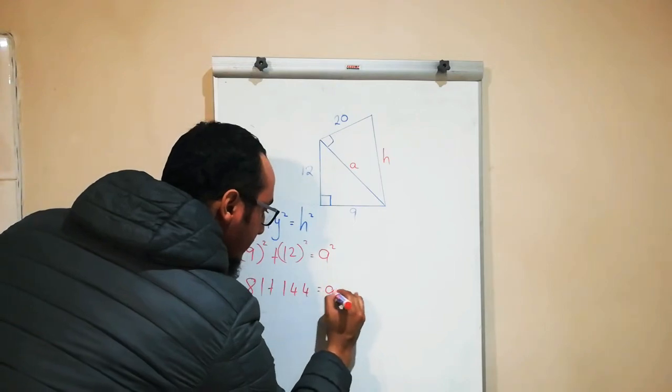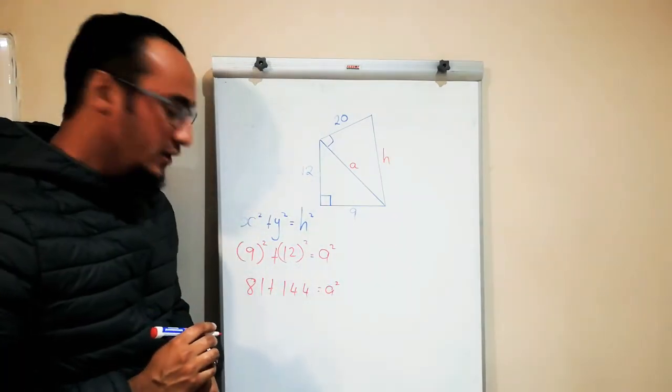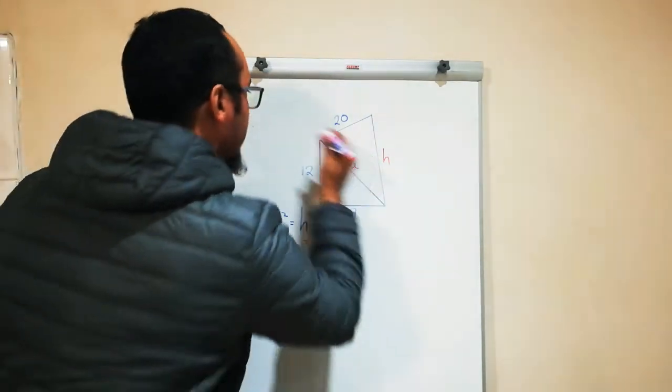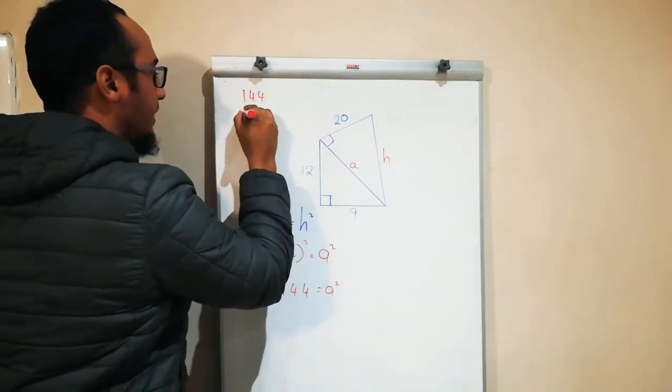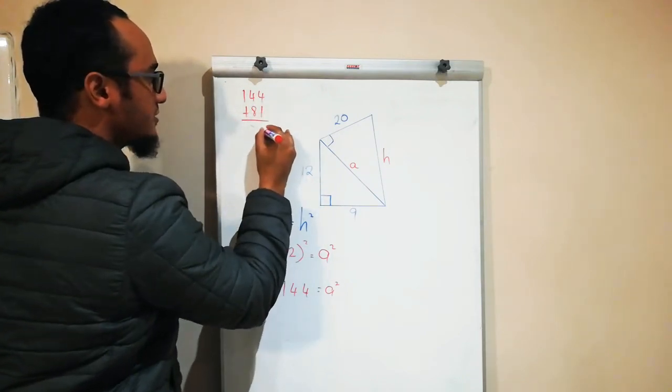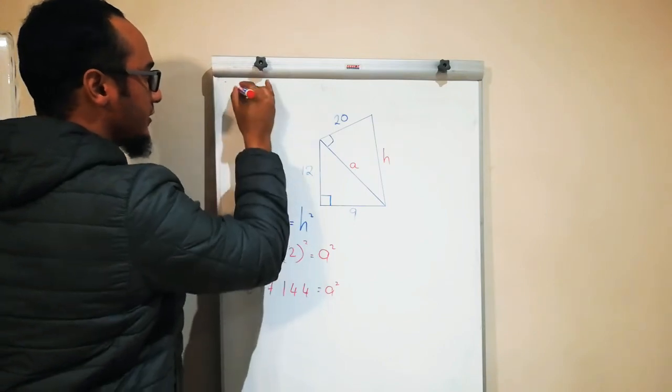81 plus 144 is going to equal—let's just work it out on the side. 144 plus 81: 4 plus 1 is 5, 4 plus 8 is 12, carry the 1—should be equal to 225.